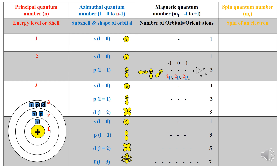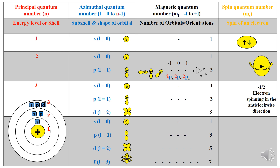The spin quantum number is represented by M sub S and describes the spin state of an electron in an atom or molecule. An s orbital can be occupied by two electrons of opposite spins. If the electron spins in the anti-clockwise direction, it gives a spin value of minus half, represented by a down arrow. If the electron spins in the clockwise direction, it gives a spin value of plus half, represented by an up arrow.